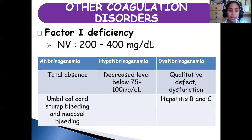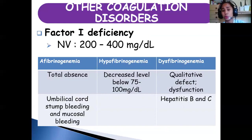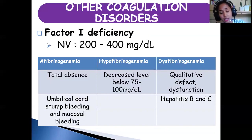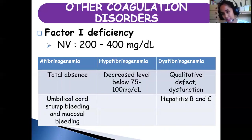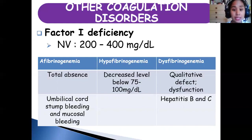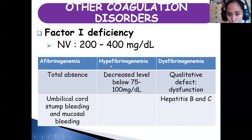Factor 1 — fibrinogen — deficiency: fibrinogen is the most abundant factor in circulation, at about 200 to 400 milligrams per deciliter. When thrombin is present with fibrinogen, it will be converted to fibrin. Your coagulation factors' main goal is to produce thrombin so it can convert fibrinogen to fibrin. If there is a problem with fibrinogen, clot formation will be affected.